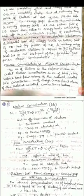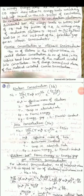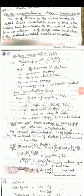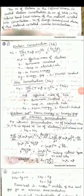Regarding carrier concentration in an intrinsic semiconductor: the number of electrons in the conduction band per unit volume is called electron concentration, and the number of holes in the valence band per unit volume is called hole concentration. Both hole concentration and electron concentration are called charge carriers. The number of charge carriers per unit volume is called carrier concentration. In the next part, we will learn the expressions for electron concentration, hole concentration, and the relation between Fermi energy and energy gap for an intrinsic semiconductor.